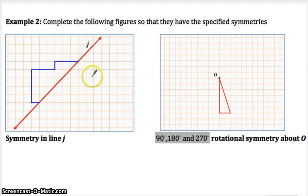Complete the following figures so they have specified symmetries. Symmetry in line J. That just means we need to reflect this over line J. So you should be getting pretty good at this. This corner is going to reflect down here. This corner is going to reflect over here. This corner, two and a half squares, two and a half squares, it's got to go right there. This point has to stay where it is because it's on the line. This now has symmetry in line J.